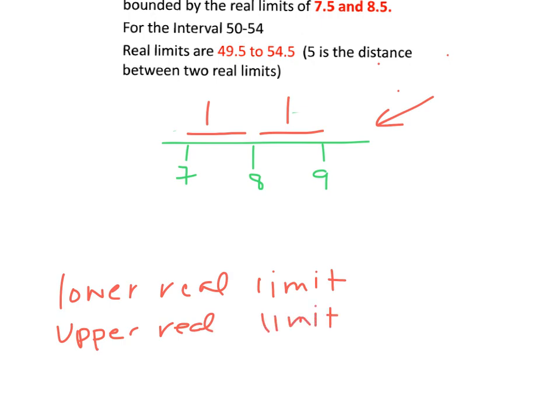So if we were to look at 7, what we would find is that 6.5 would be the lower real limit for this number and 7.5 would be the upper real limit for this number. So really 7 is represented by the distance between 6.5 and 7.5.